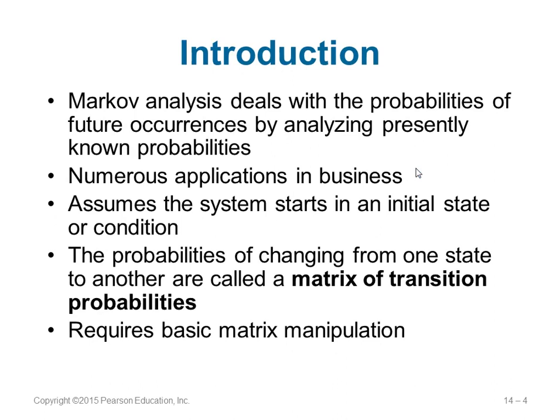Markov analysis deals with the probability of future occurrences. We know some probability about the current known state and we want to find out the probability of something in the future. This can be applied to plenty of computing as well as business and other applications. The first condition you need to know is that the system starts in an initial state or condition, and the probability of changing from one state to another is called the matrix of transition probabilities.